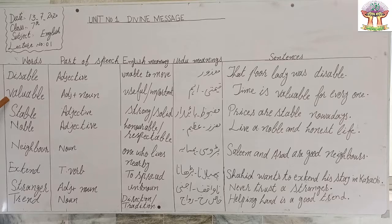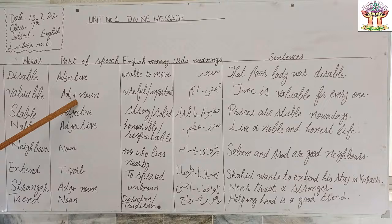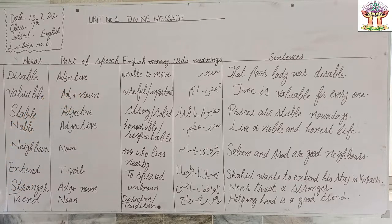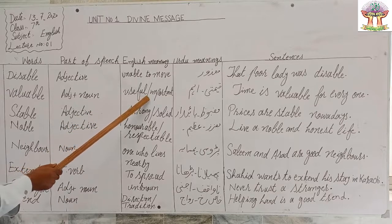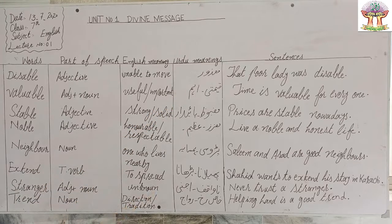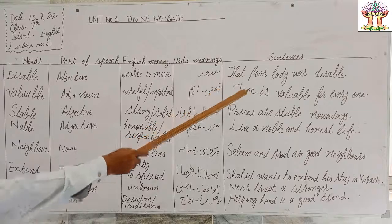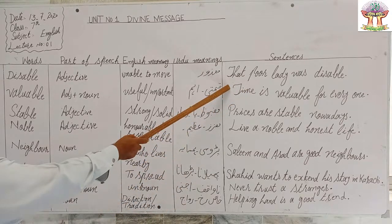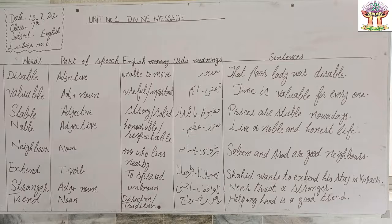Second word is 'valuable.' It is adjective and noun in parts of speech. English meaning: useful or important. Urdu meanings: keymati and dumani. Sentence: 'Time is valuable for everyone.'